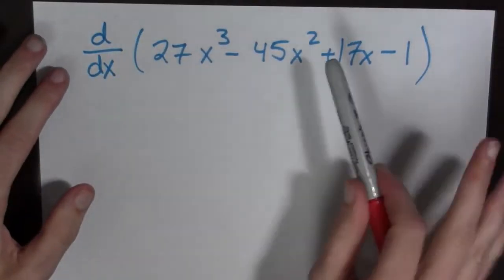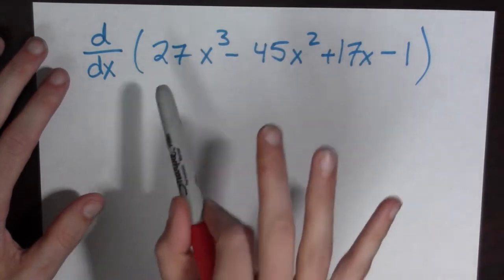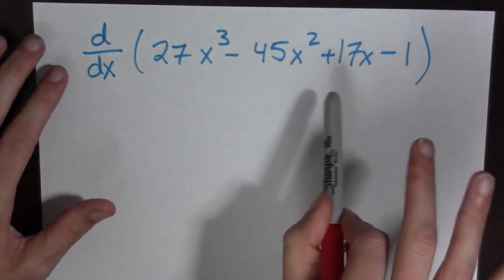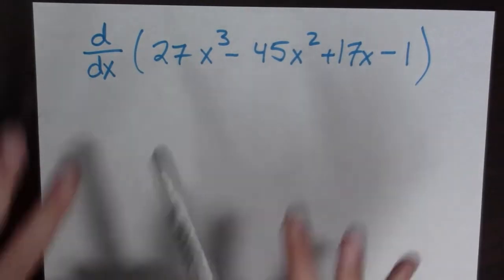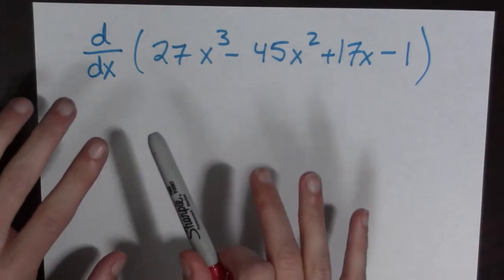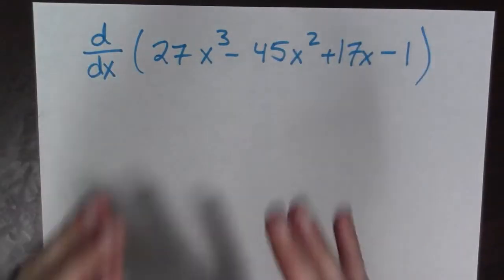Let's do it. So the first question is d/dx of 27x³ - 45x² + 17x - 1. Take a minute and write the question down. Don't do it, but write it down.